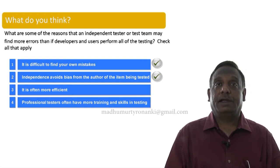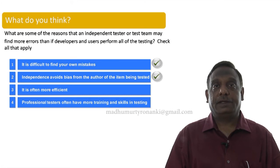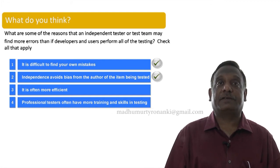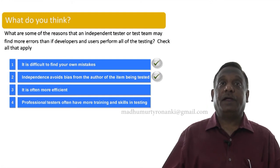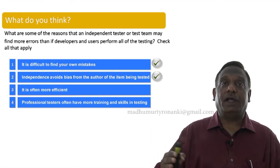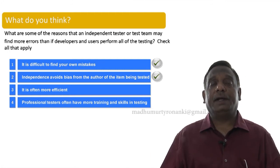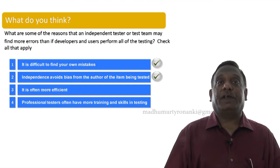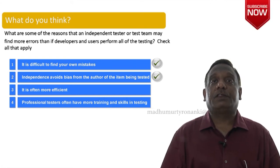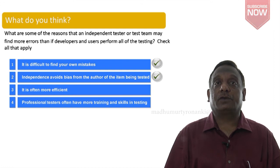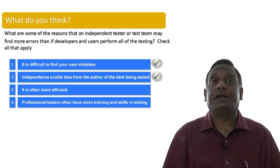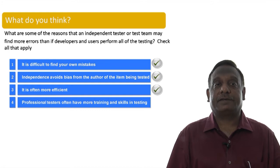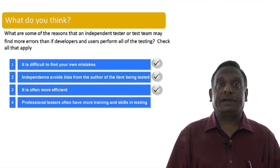The third point: is independent testing often more efficient? The answer is yes, though there can be arguments. If developers find and fix issues themselves it may seem more efficient, but when an outside team finds defects, there is a bit of workflow and time involved. However, the type of defects found, the objectivity of testing, and the quality improvement achieved definitely make organized independent team testing an efficient approach overall.